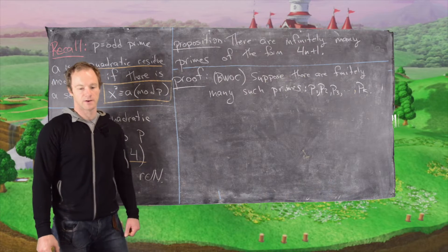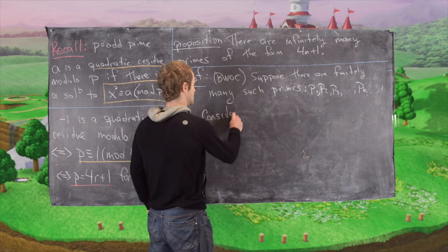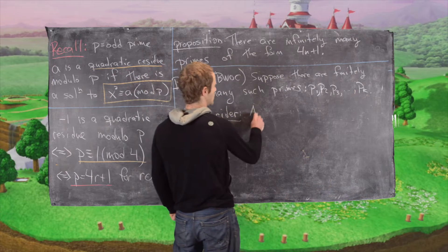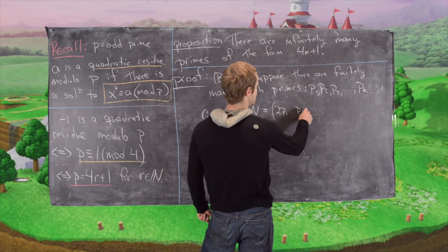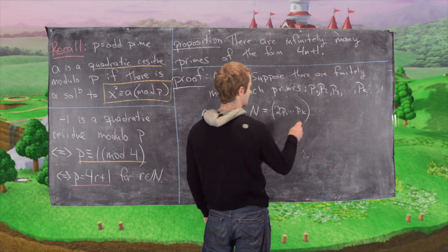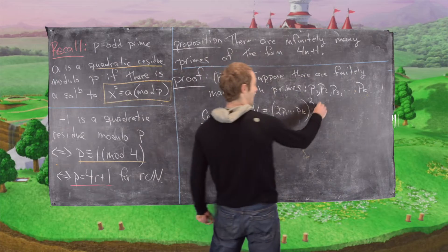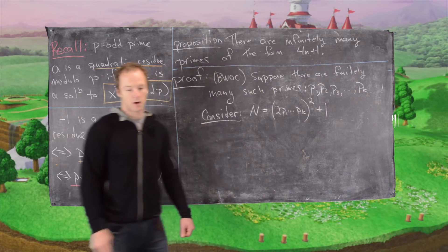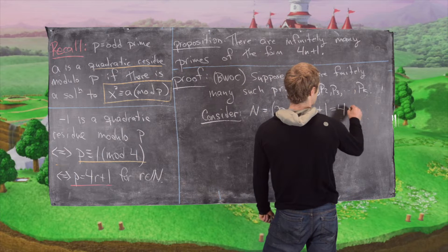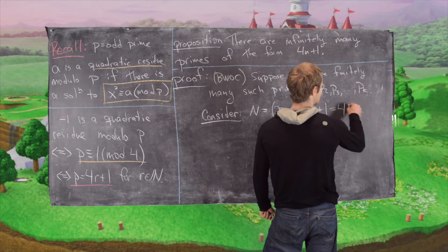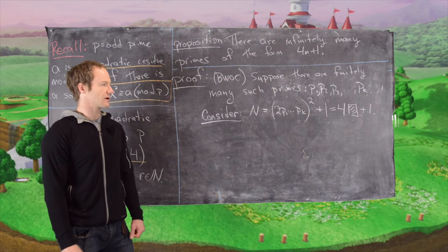Now we want to consider the following number. We'll call it capital N and it will be 2 times p1 up to pk, so we're taking that big product and then we're squaring it, and then we're adding 1. Now notice that this thing is of the form 4 times something plus 1. So we've created a new number of the form 4 times something plus 1 out of our primes of that form.